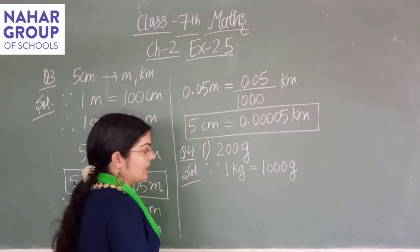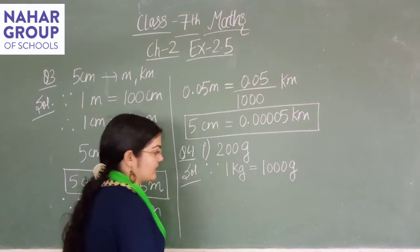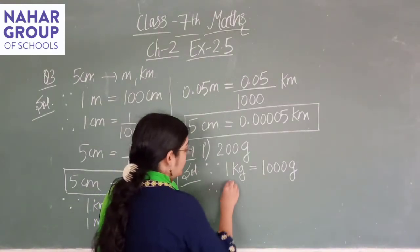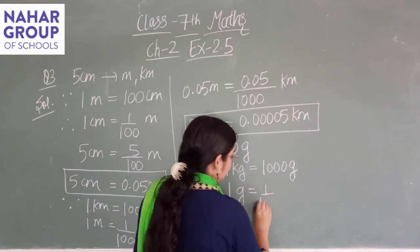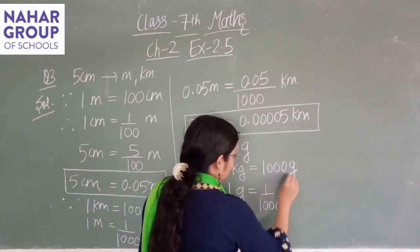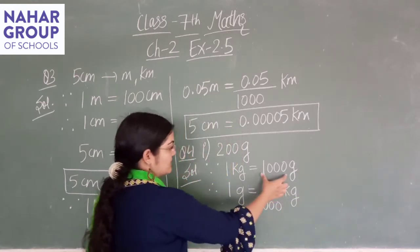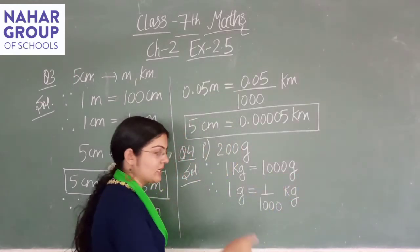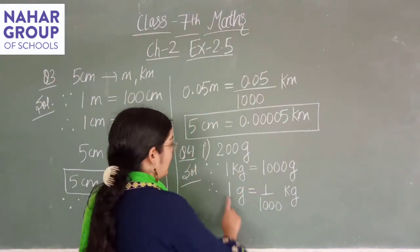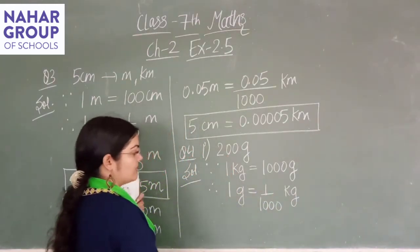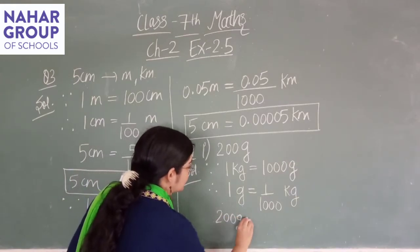हमें gram से kilogram में करना है, means इसका just opposite करना है। तो: 1 gram is equal to 1 upon 1000 kilogram — kilogram की जगे gram, 1000 की जगे 1/1000, gram की जगे kilogram। क्योंकि 1000 से multiply करेंगे gram में convert करने के लिए, kilogram में convert करने के लिए 1000 से divide करेंगे। अब यहाँ 200 gram है, so 200 gram is equals to 200 divided by 1000।